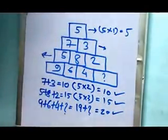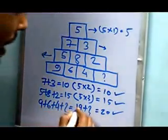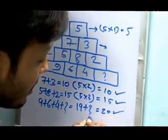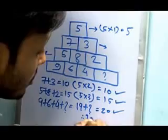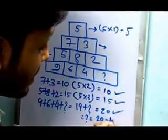If 19 plus question mark equals 20, then question mark equals 20 minus 19. Question mark equals 1.